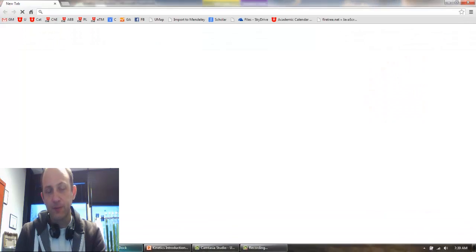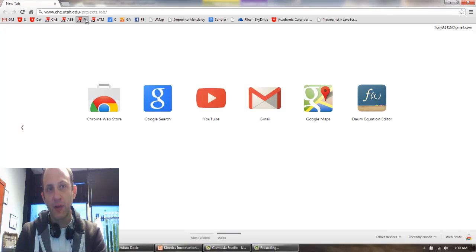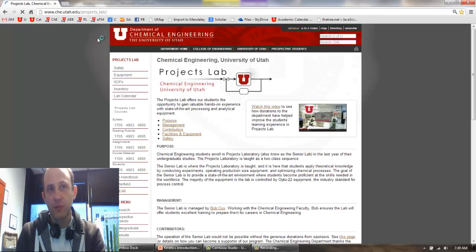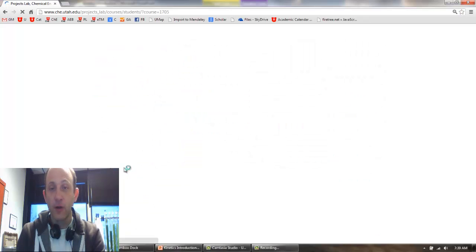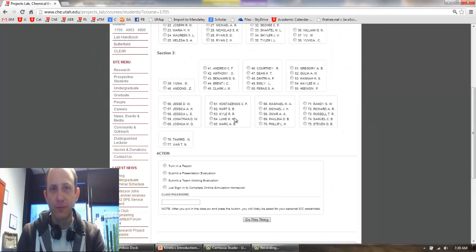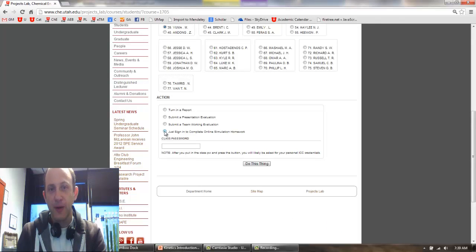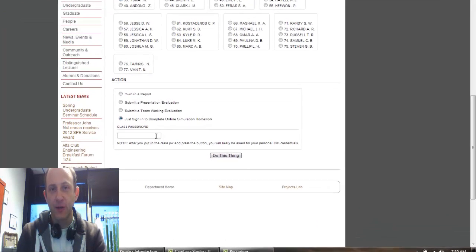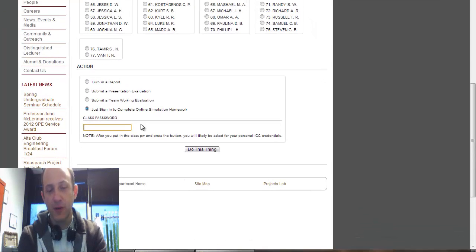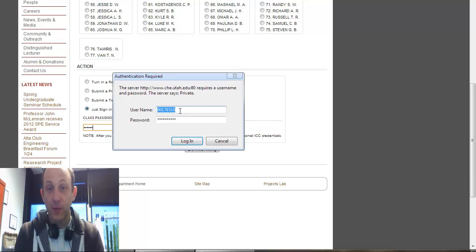So, I'm going to open up the ProjectsLab web page. It's just our department site slash ProjectsLab. You can get to it from the department site in the undergraduate section. I'm going to go to the student hub for 1705 and it will be Yuma because that is the first name there. Just sign in to complete online homework simulations, put in the class password. It's just going to ask for my department credentials, the ones that I use in the ICC computers.